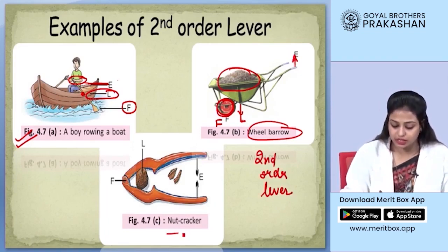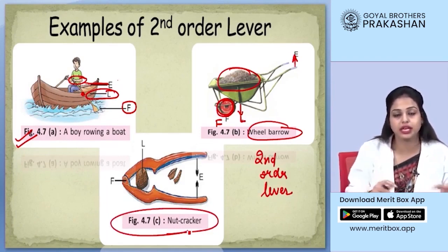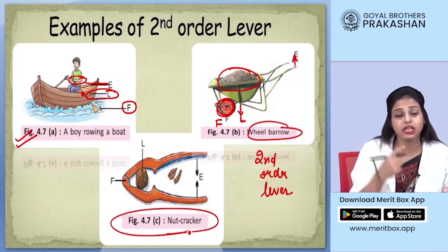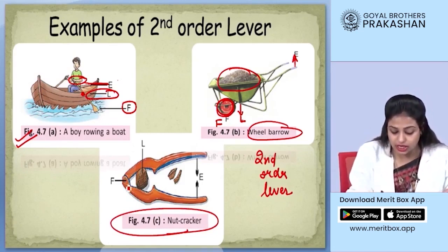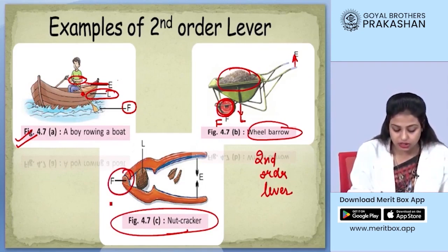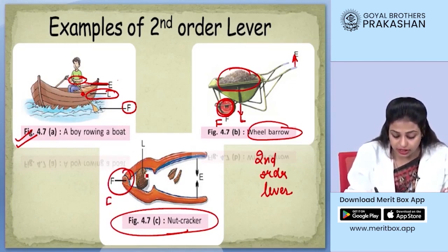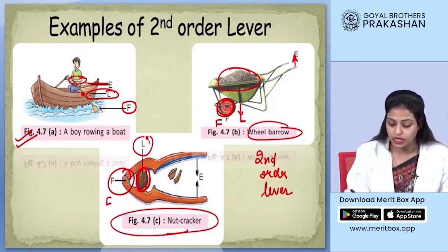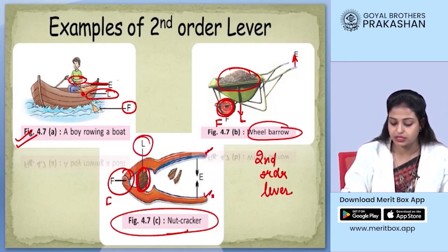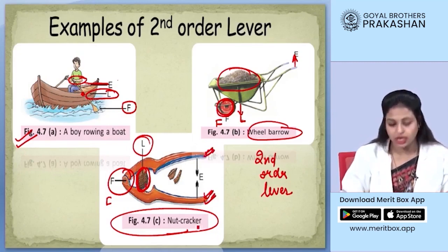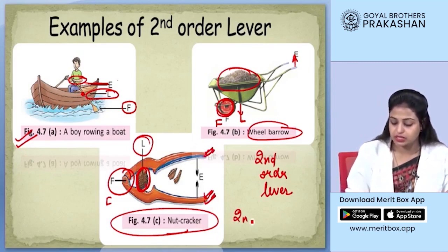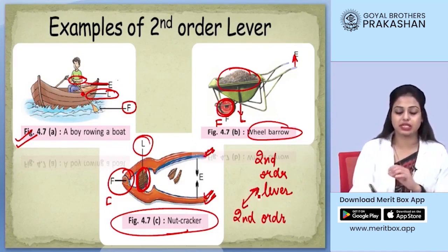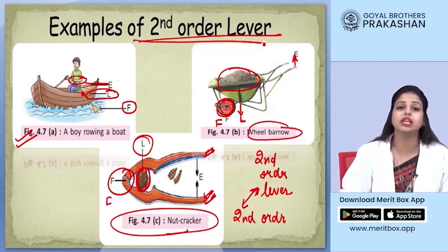The last example is a nutcracker, used to crack the shell of nuts. The fulcrum is where the movement is free — the edge of the nutcracker. The nut whose shell has to be broken is the load, and the effort is applied at the two handles of the nutcracker. This is also an example of a second order lever.